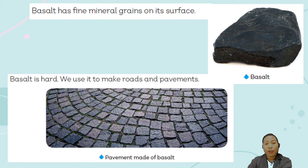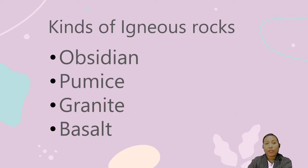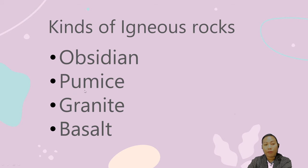So those are four kinds of igneous rocks: obsidian, pumice, granite, and basalt. Obsidian is like a crystal and very shiny. Pumice is porous and very light — it can float on water. Granite can be used to build houses or buildings, and basalt can be used to make pavements or roads.